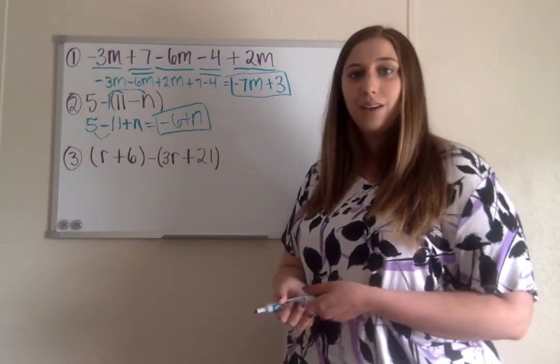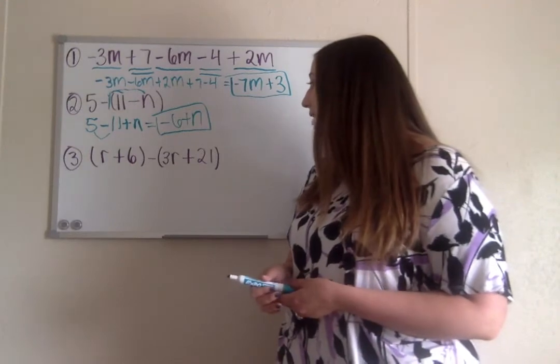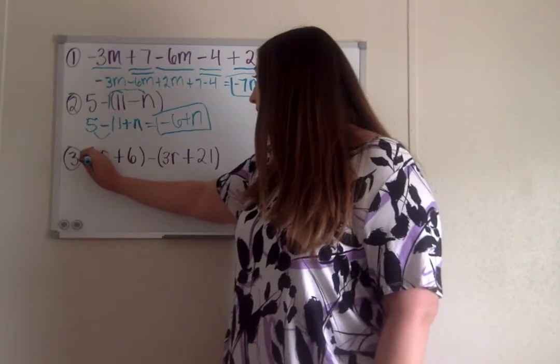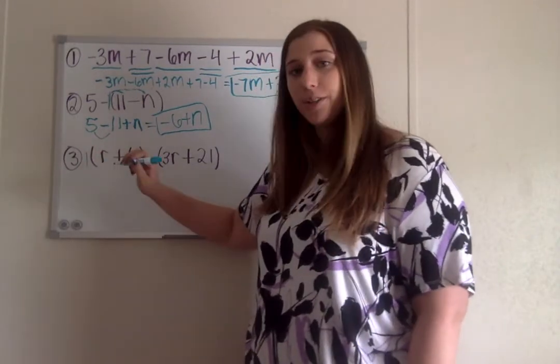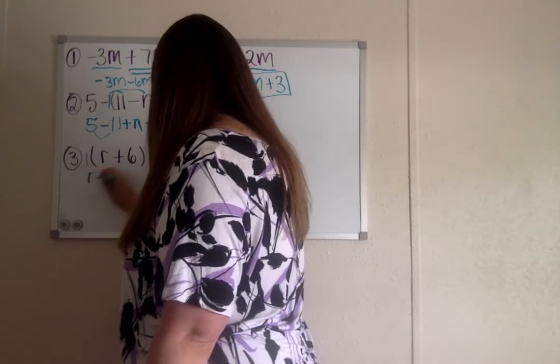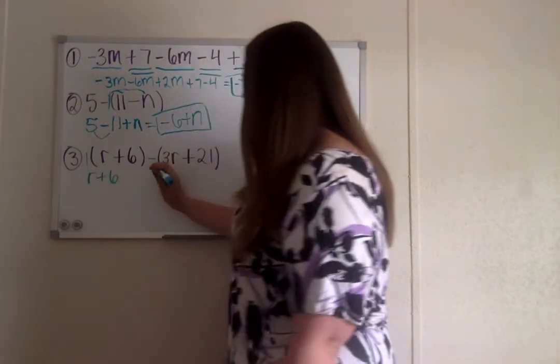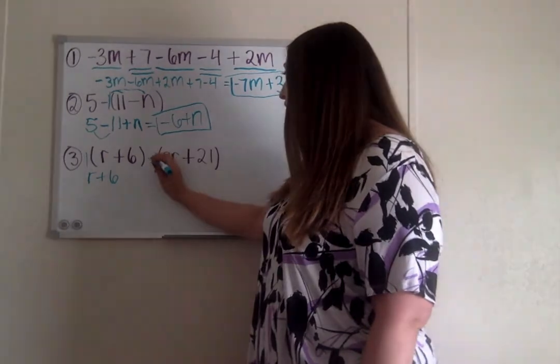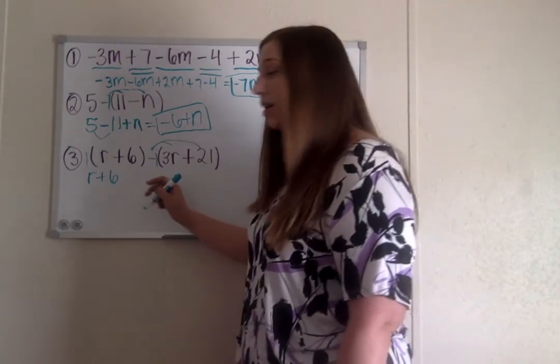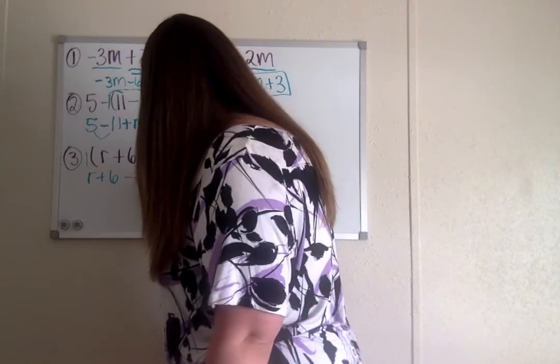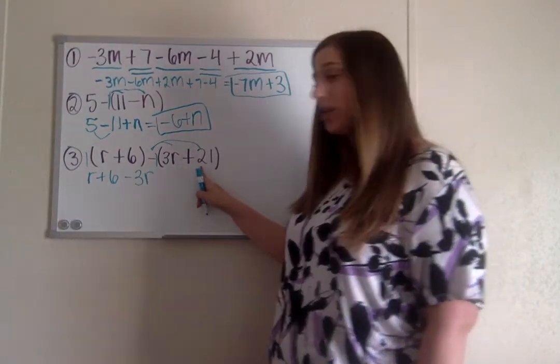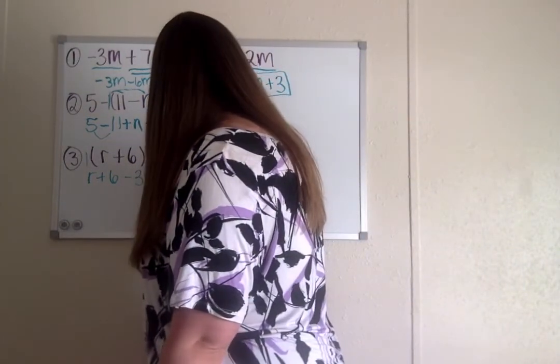So for number three, I see parentheses, so the first thing we should do is distribute. There's really just a positive one in front of the first set of parentheses, so distributing a positive one is going to keep everything the same. We still have r plus 6. But in our second set of parentheses we're distributing a negative one there, so negative one times 3r gives us negative 3r, and then we have our negative one times positive 21, which gives us negative 21.